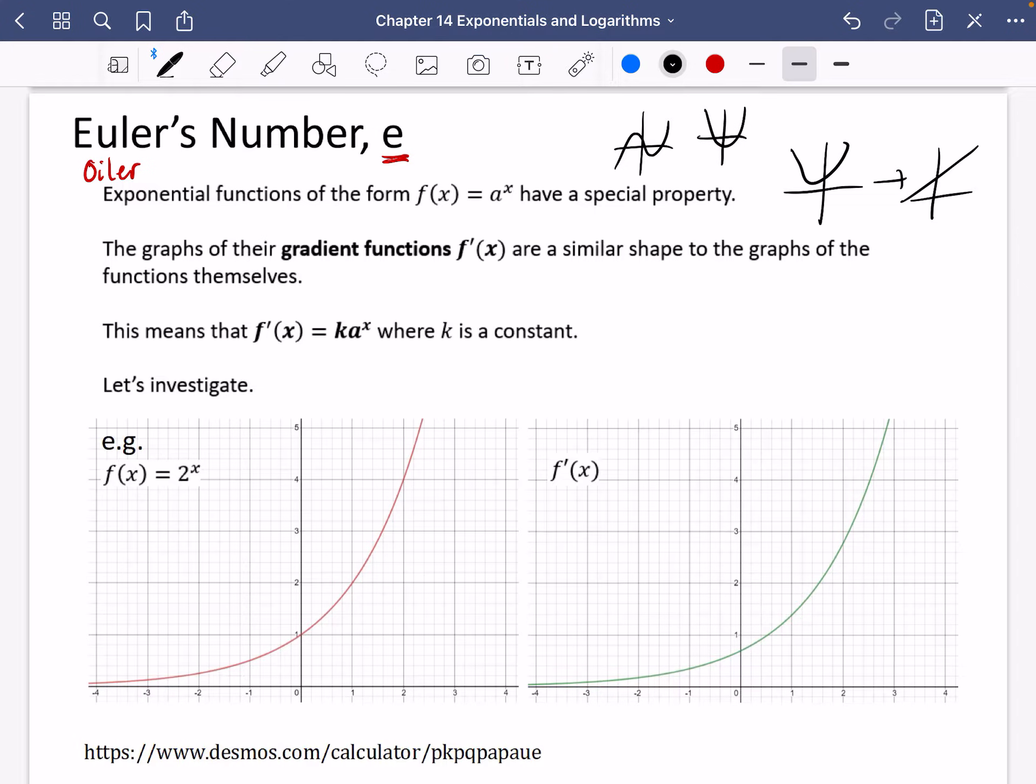Okay, so these are weird, because when you differentiate an exponential, you get a graph that also is an exponential. So this means that the gradient function f'(x) is equal to ka^x. It is just the same exponential function, but it has just been multiplied in front by some kind of constant. So we're going to investigate this.